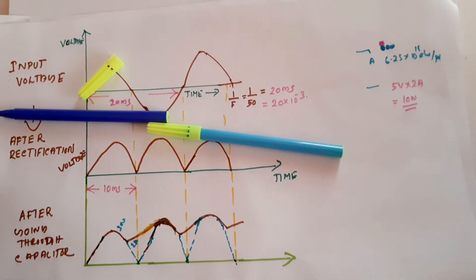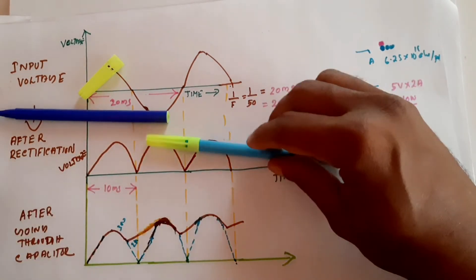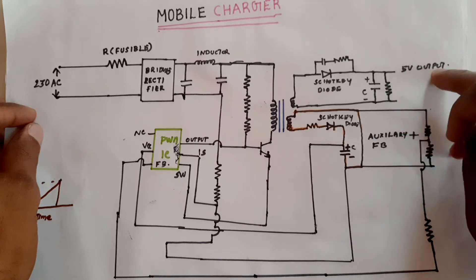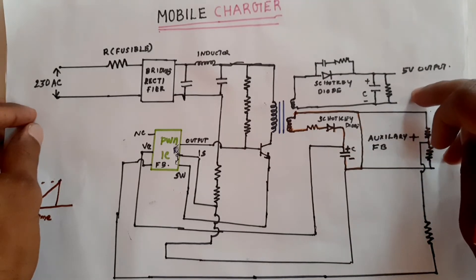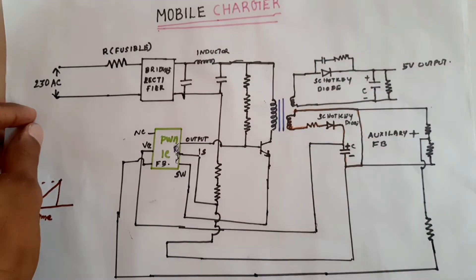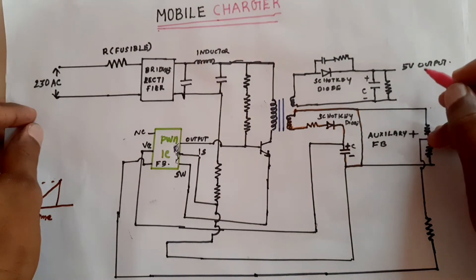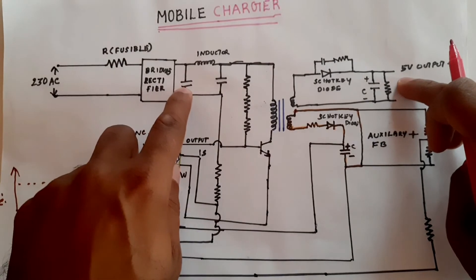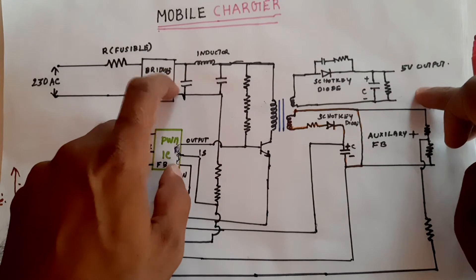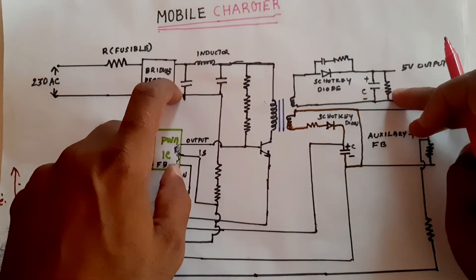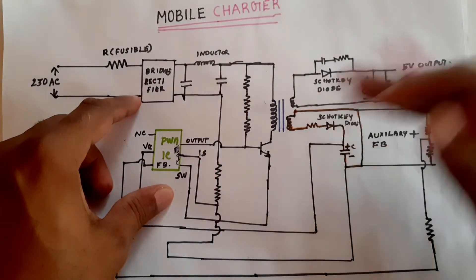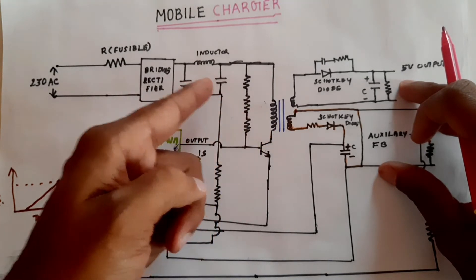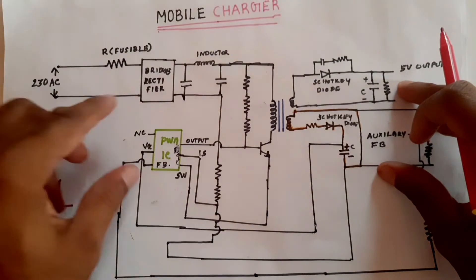Now we calculate the required input power. If we want 10 watts of output power at 5 volts and 2 amperes, we must account for losses. There will be some losses in the inductor, capacitor, PWM IC, or transistor switching IC.